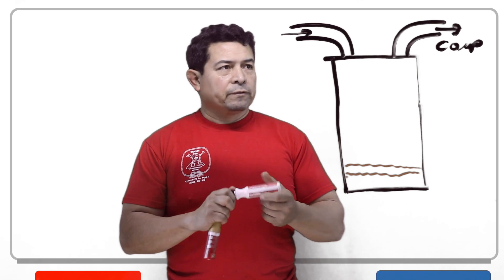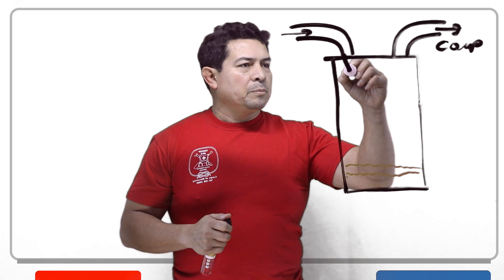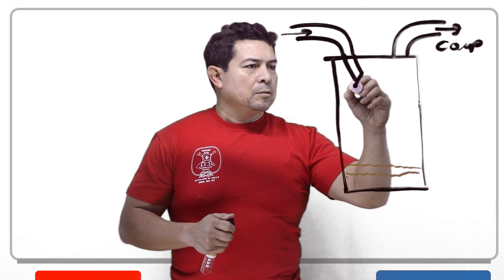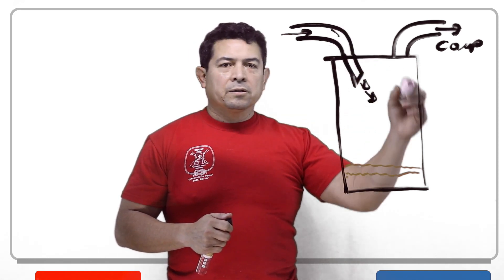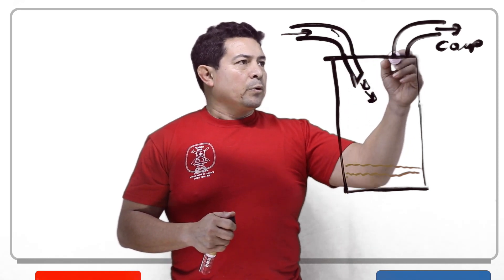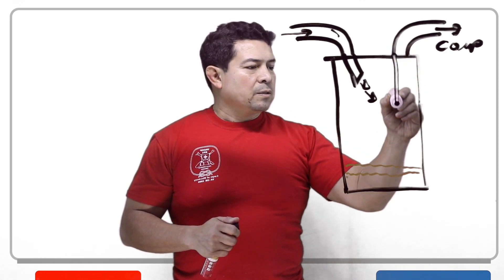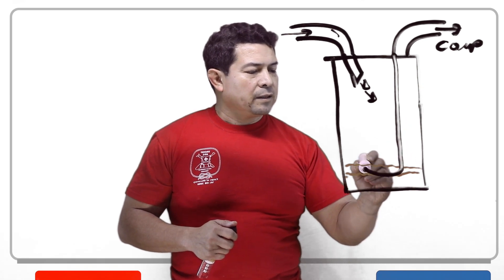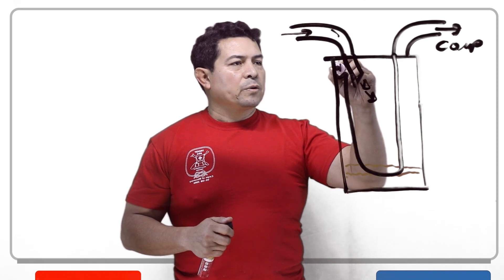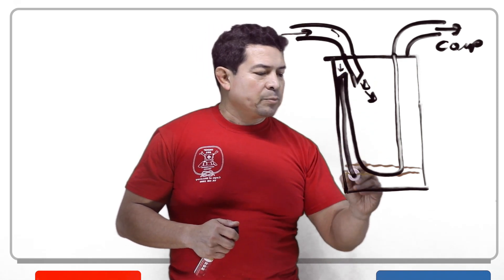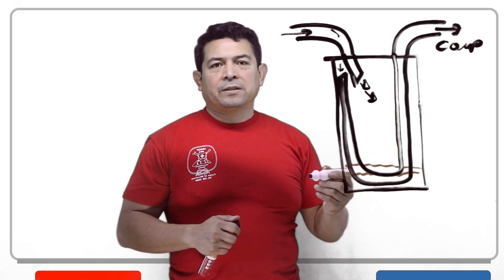So what happens is, refrigerant is going to come in here and it's basically going to be shooting in and swirling around. The refrigerant is going to be going out, but what they have done is they have piped this so that it comes down through here and draws the refrigerant from the top. So the refrigerant comes in and then travels down this pipe going out to the compressor.